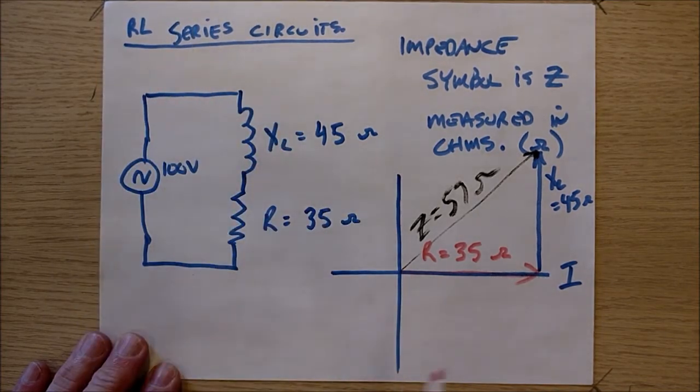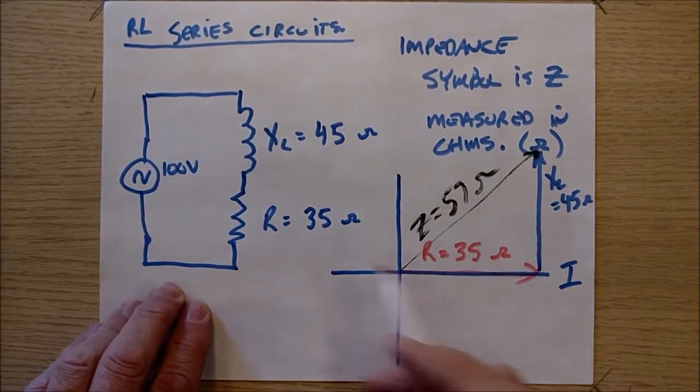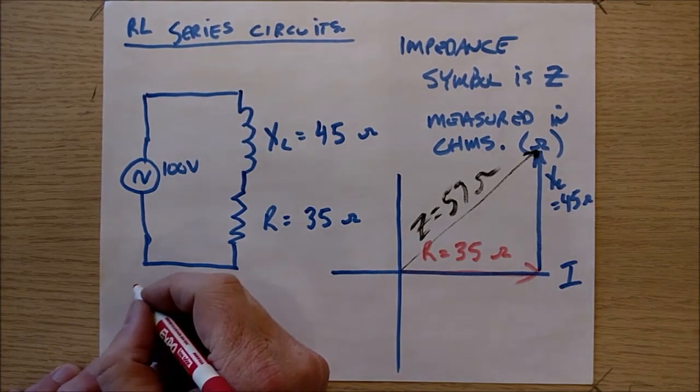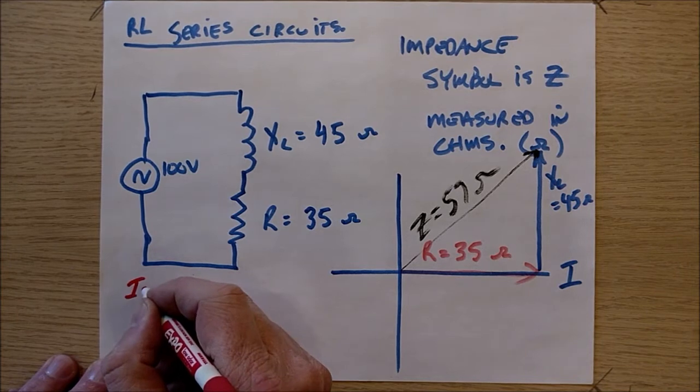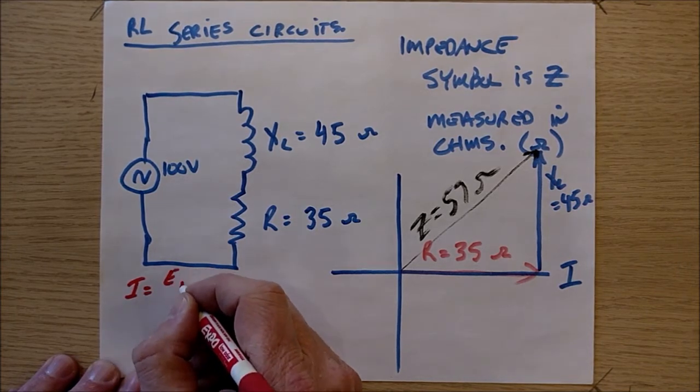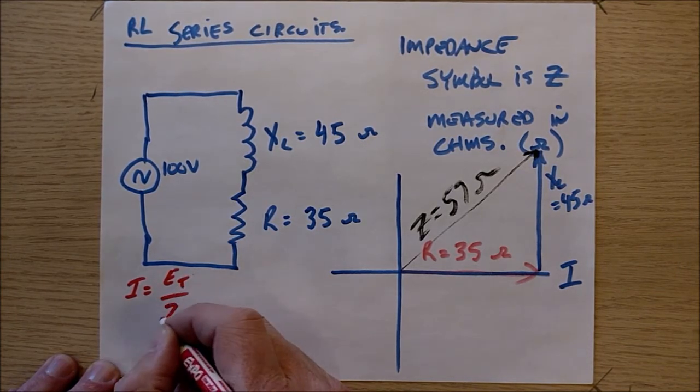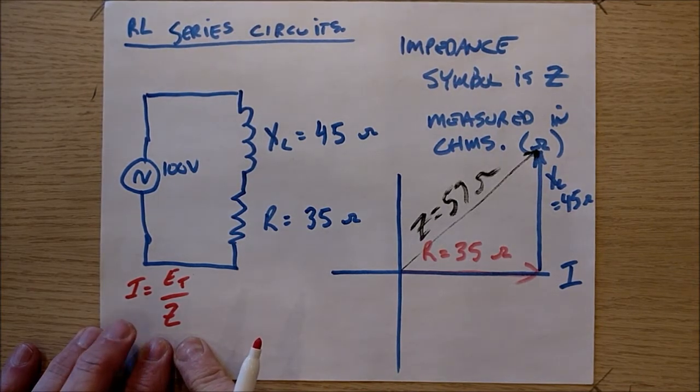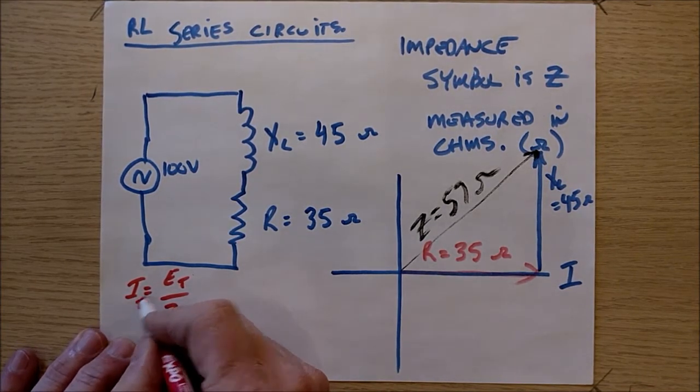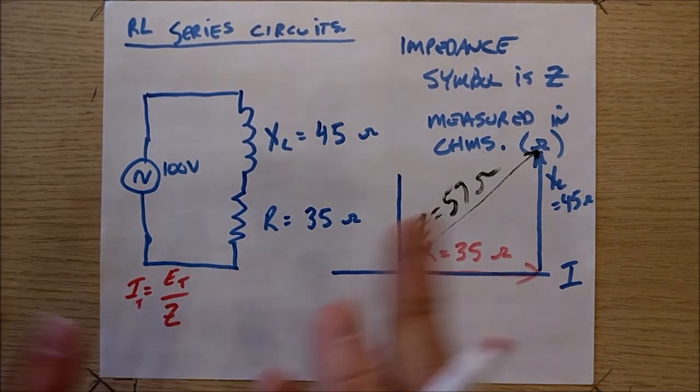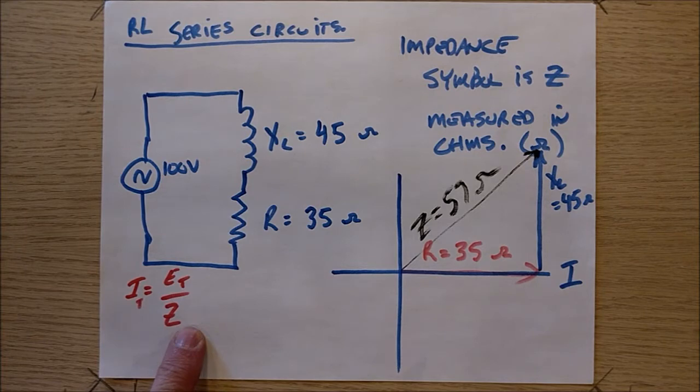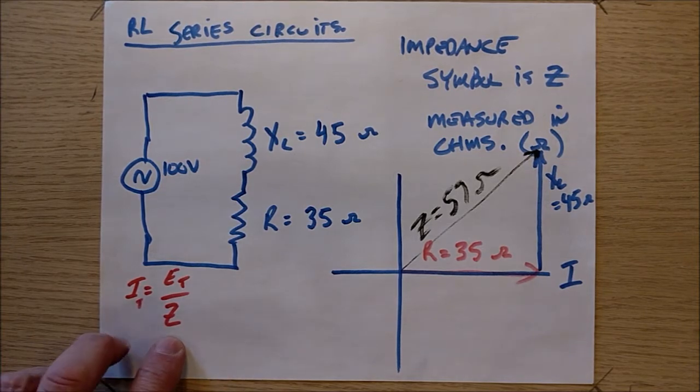This is a series circuit, so there will only be one current, and I can calculate that current using Ohm's law. I'm going to do it right here. I is going to be E total over Z. And this is exactly the same formula that you would use in level one to calculate the total circuit current. It would be the total voltage over RT, but there is no such thing as RT now. RT is now replaced with Z.